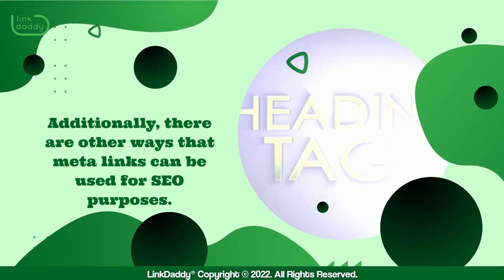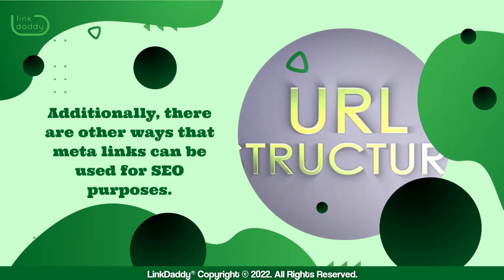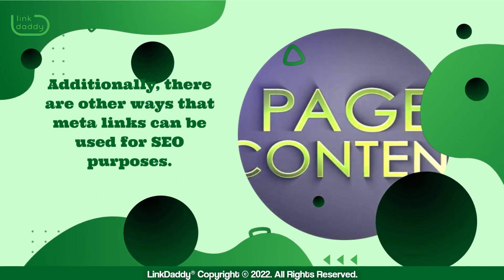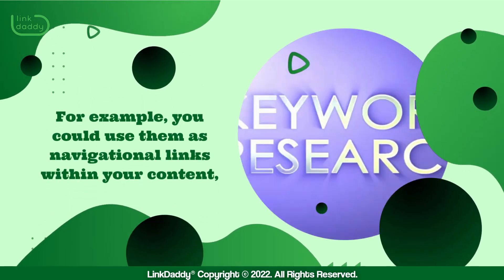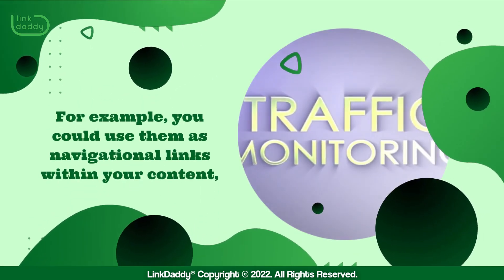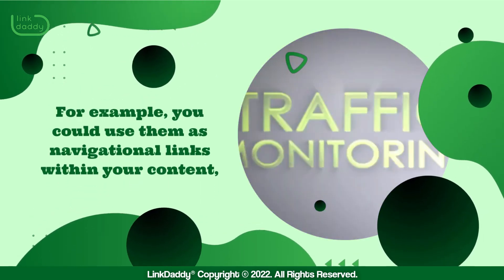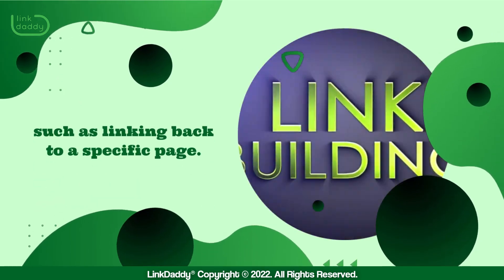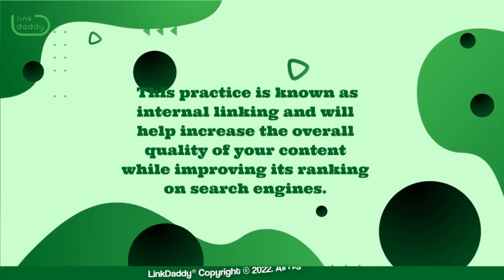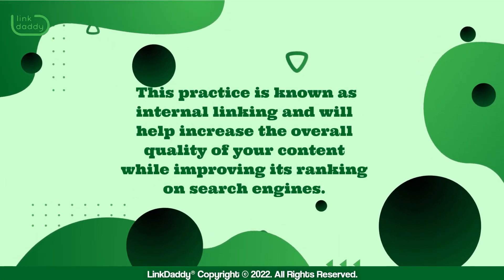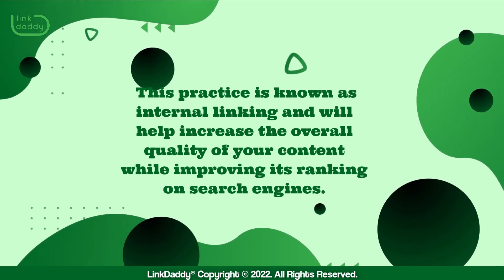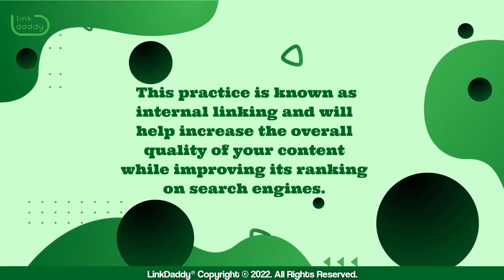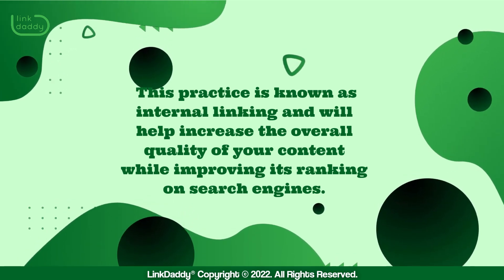Additionally, there are other ways that meta links can be used for SEO purposes. For example, you could use them as navigational links within your content, such as linking back to a specific page. This practice is known as internal linking and will help increase the overall quality of your content while improving its ranking on search engines.